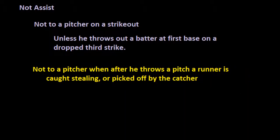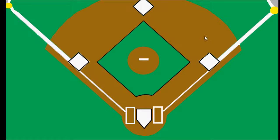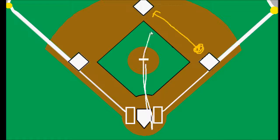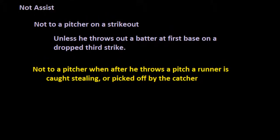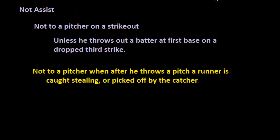For example, if we have a runner on first base who tries to steal on the pitch, the catcher then throws to the second baseman or shortstop covering the base, who receives the ball and tries to tag the runner out. If the runner is out on a caught stealing, we would give an assist to the catcher but not to the pitcher.